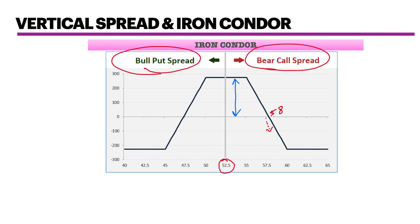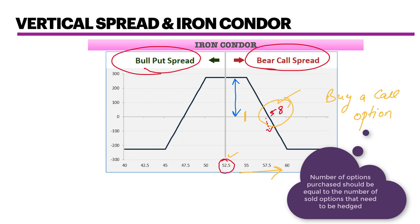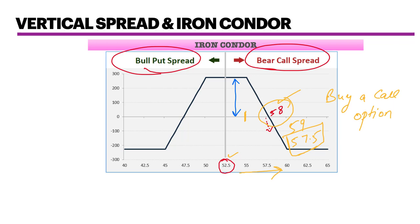Let's say this time we are being challenged on our call side. The asset was at 52.50 when we took the position; right now it's at 55, and it appears the underlying will actually surpass our breakeven level of 58. So in order to defend my trade on the upside, what I'll do is go ahead and buy a call option. I can choose to buy a call at the 58 strike, or at 59, or even at 57.50 — it's up to me, and depends on which strikes are available. The idea is simply to buy a call option.